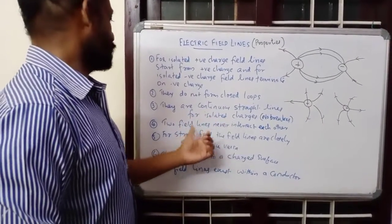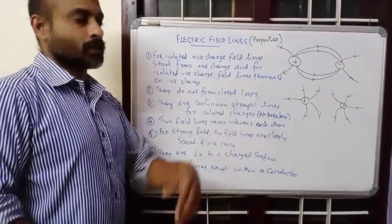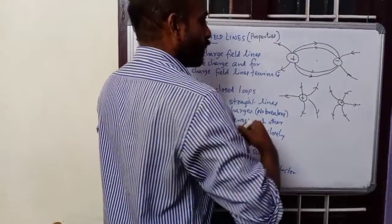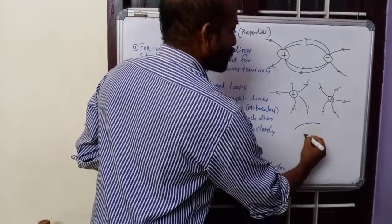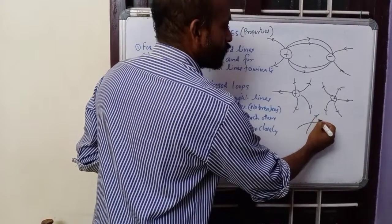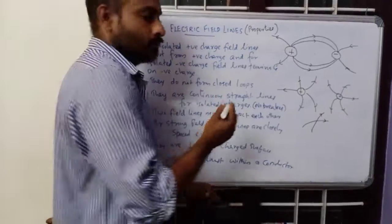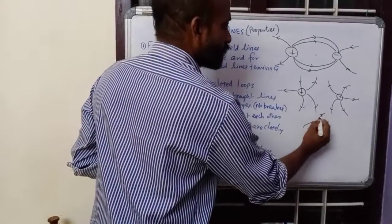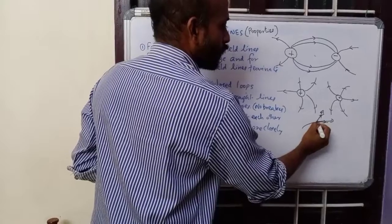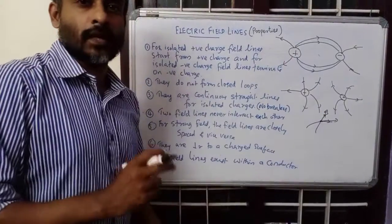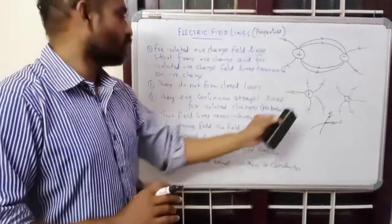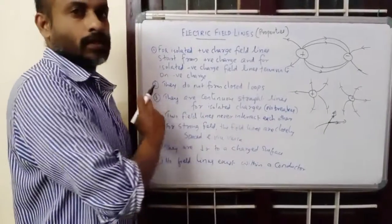Two field lines will never intersect each other. If two field lines intersected, each would have its own direction at that point, meaning two directions for the same field at one point — which is practically impossible. So two field lines will never intersect each other.